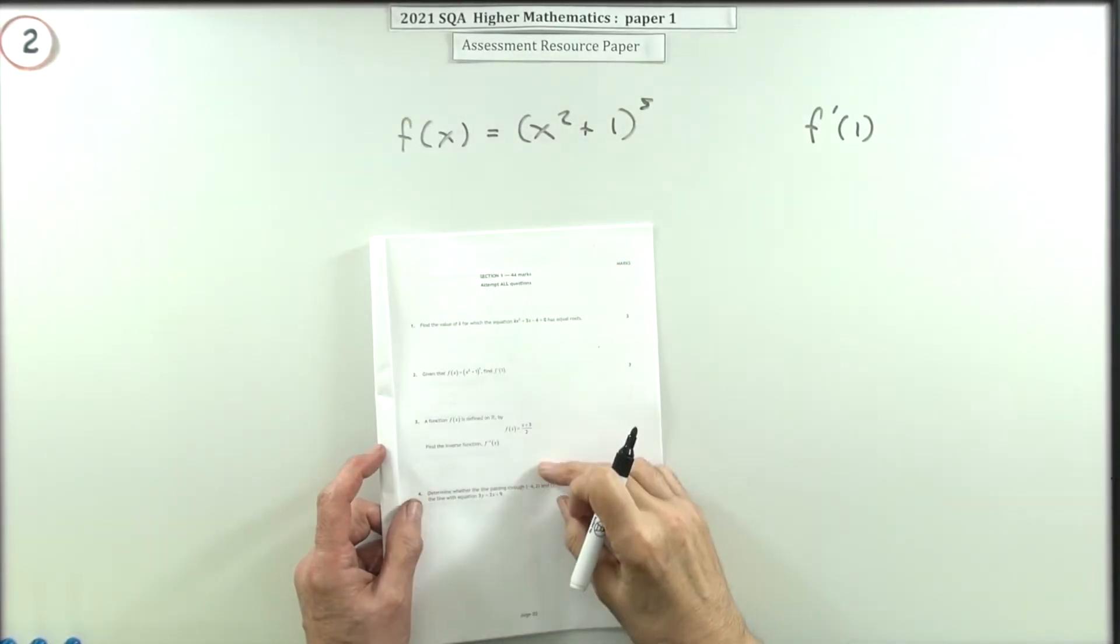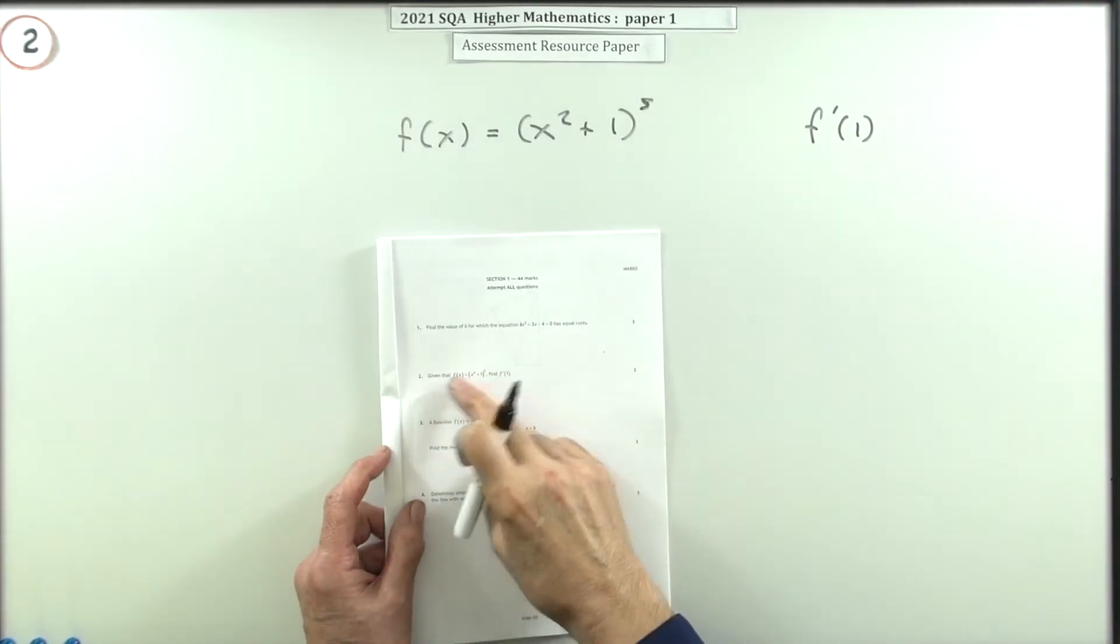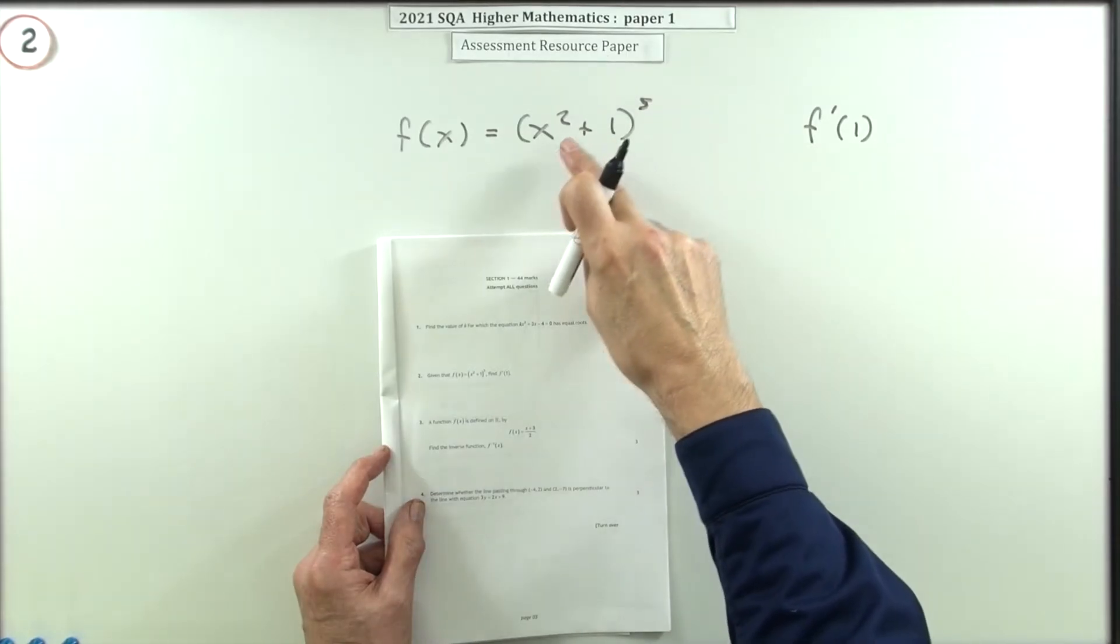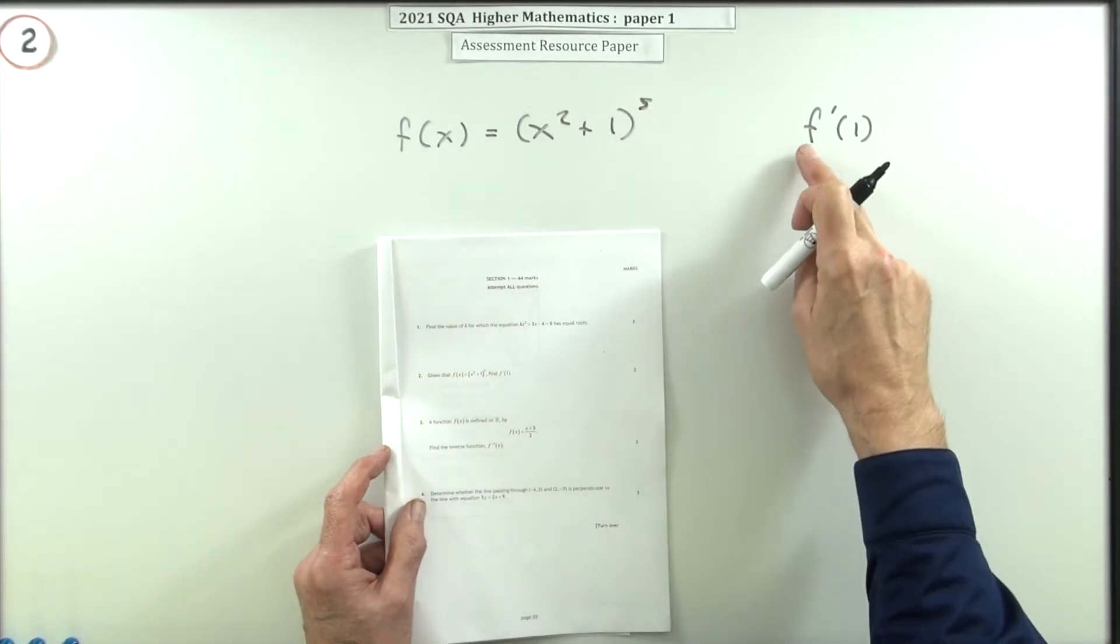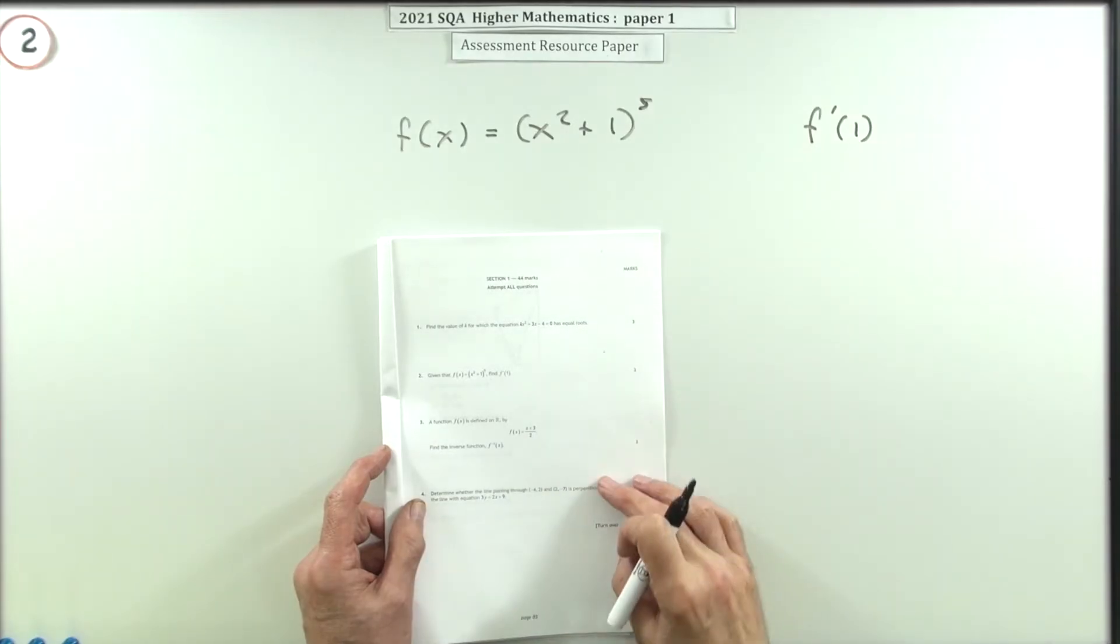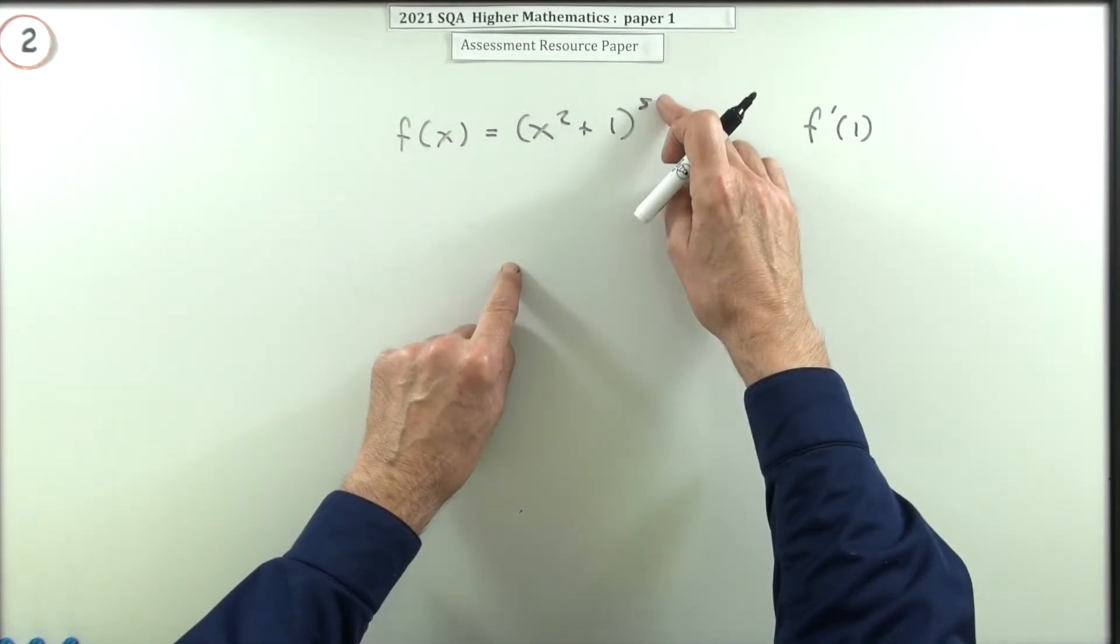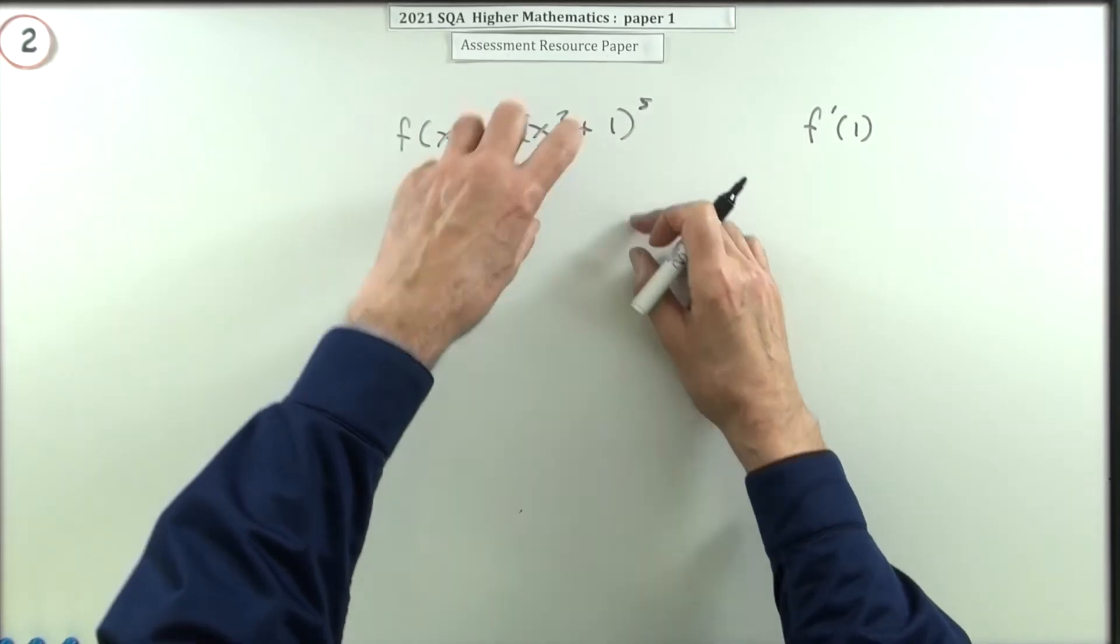Number two, then from the 2021 non-higher maths paper. Given that f(x) is this expression here, notice you've got a power of a bracket—that's a function of a function—find the value of the derivative when x is one.